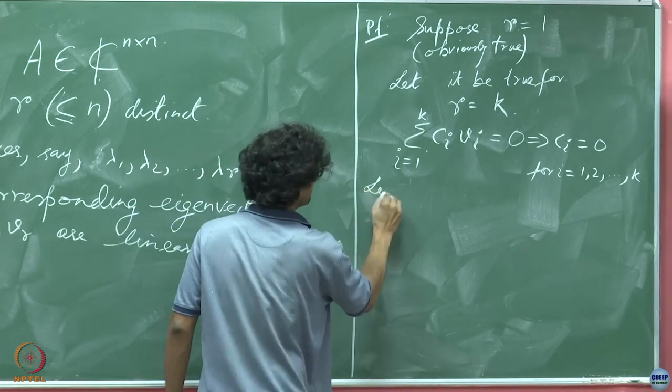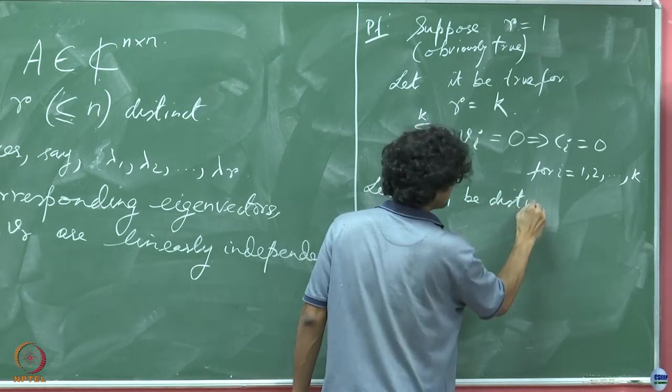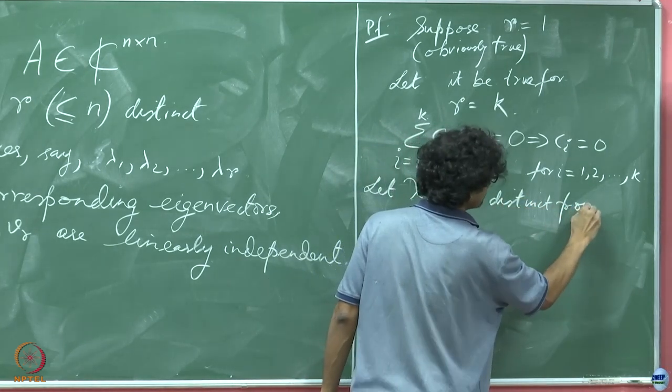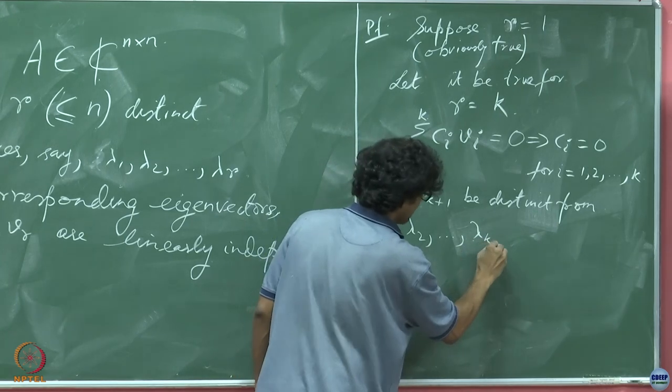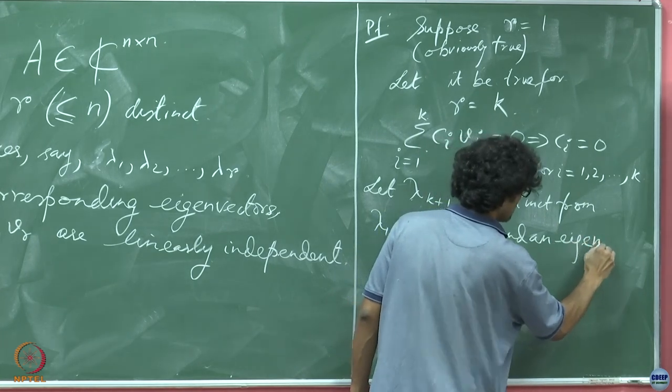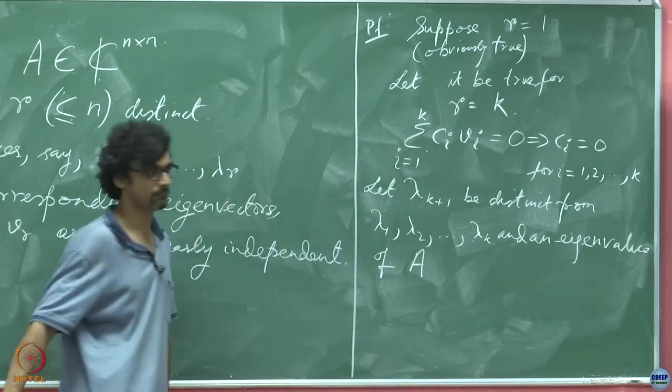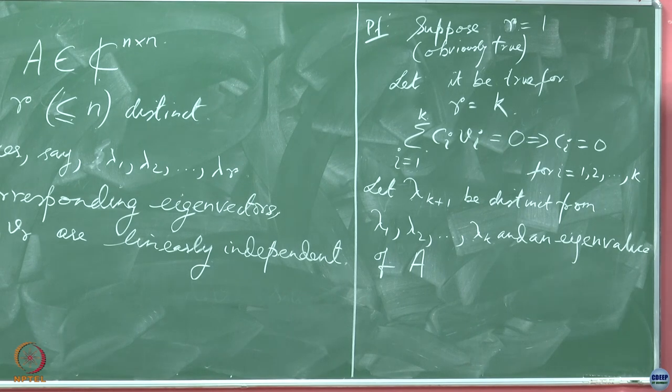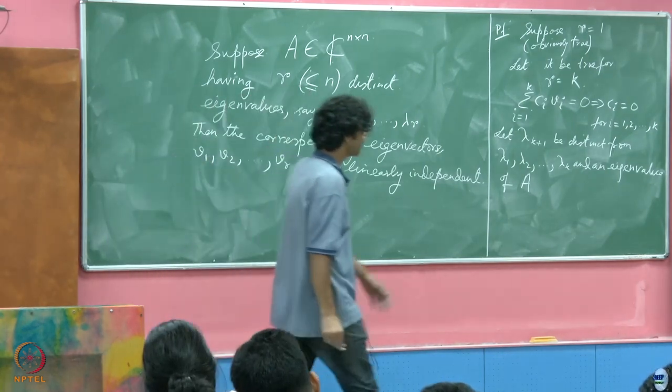Let lambda k plus 1 be distinct from lambda 1, lambda 2 till lambda k and an eigenvalue of A. We are going to expand the size now and say at least up to size k, we have this property that they are linearly independent. If we can show it to be true for k plus 1, then we will be done.